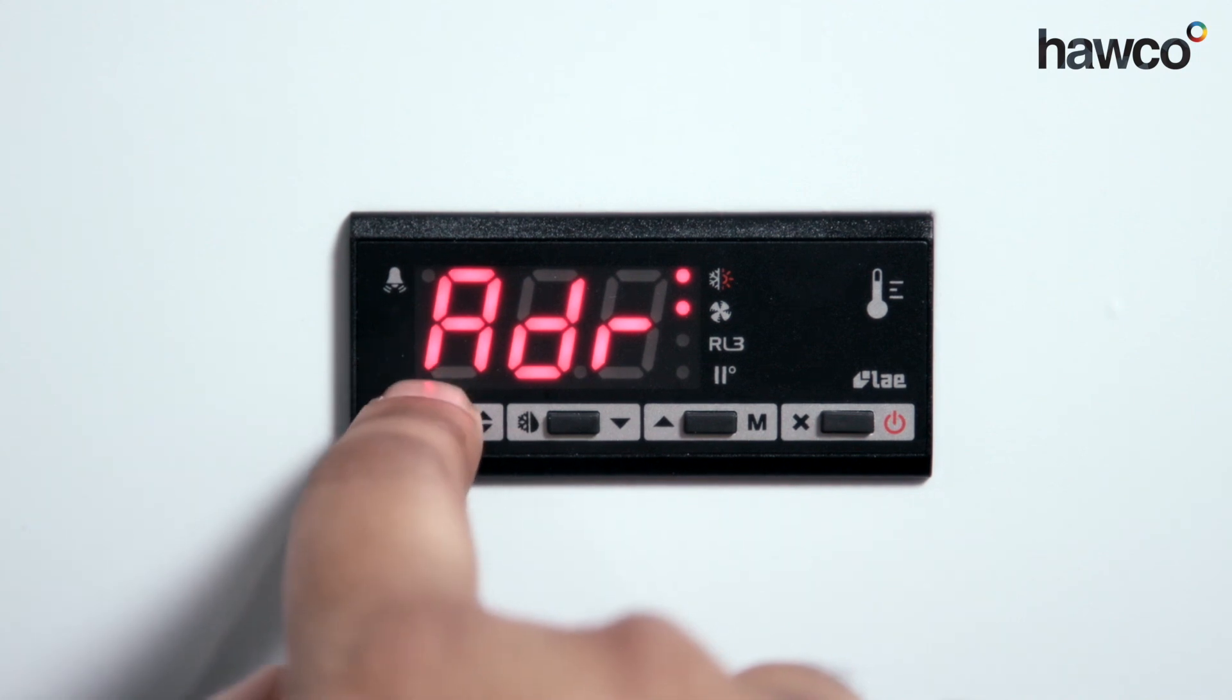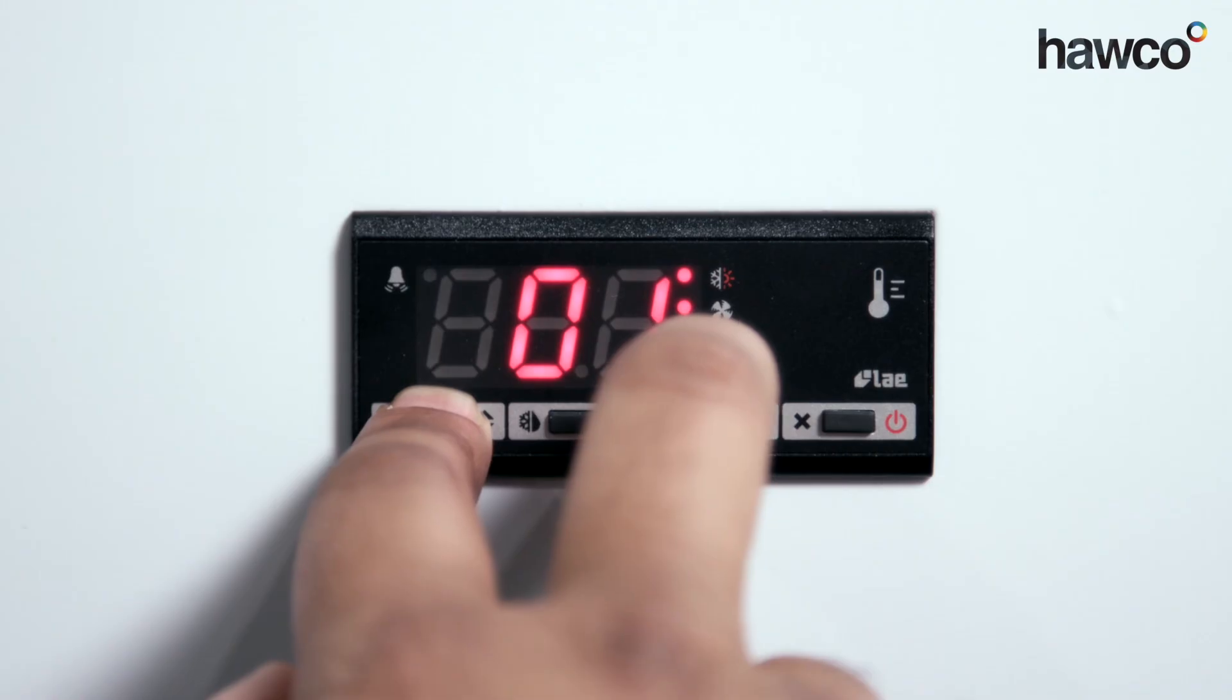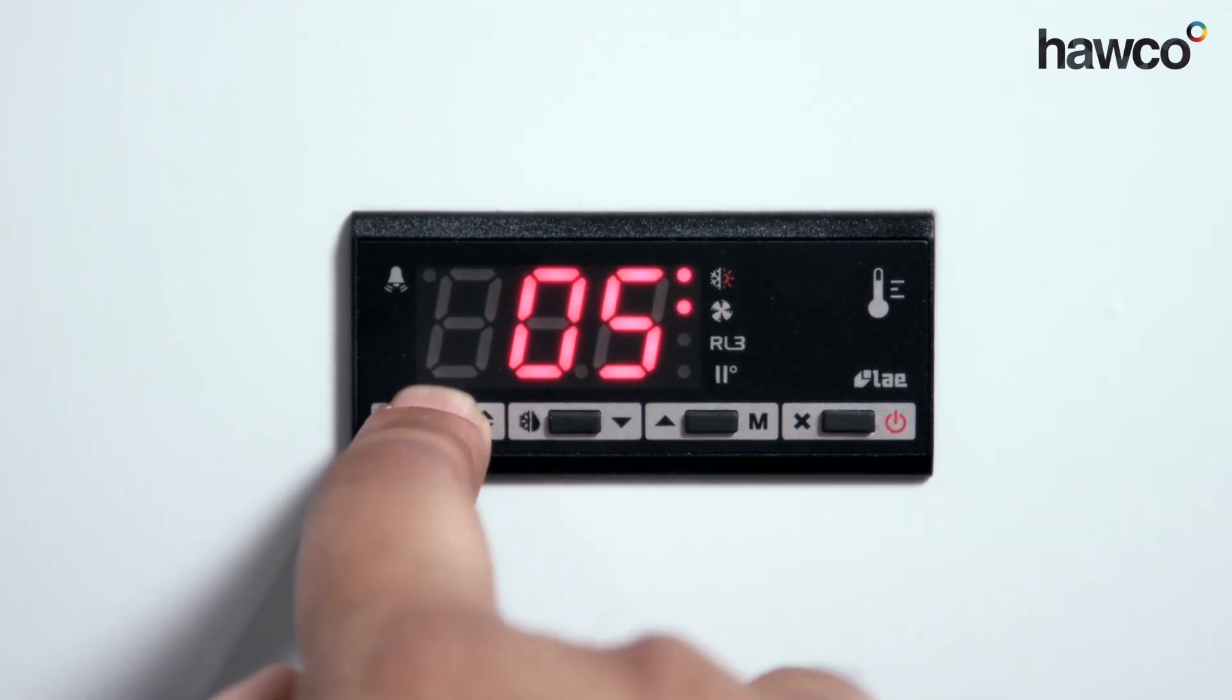ADR is the address. If you have this in a line of communication with other LAEs, you can have them all go into one central controller. This one is registered at number one, but if there were five in place and this one was number five, it would need to be set to five.